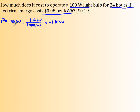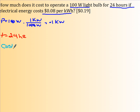I know I have 24 hours, so my time is 24 hours. The electrical cost is $0.08. So the cost — use the word COST — is $0.08 cents per kilowatt hour.